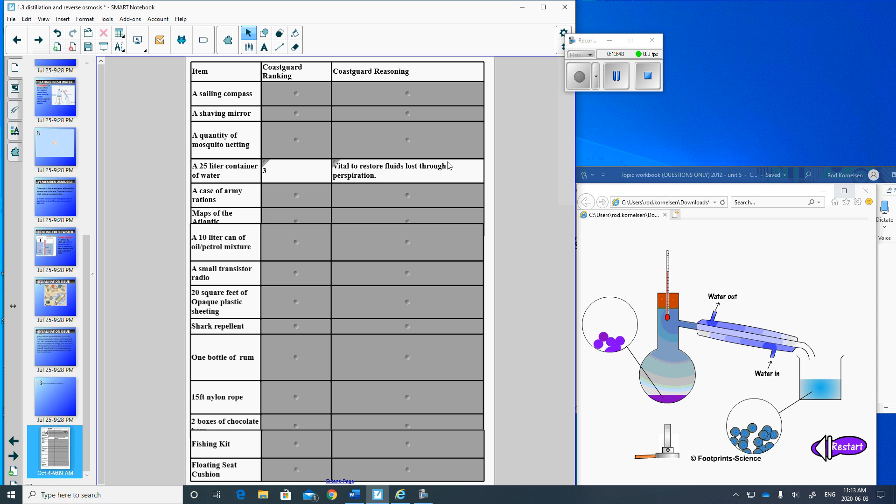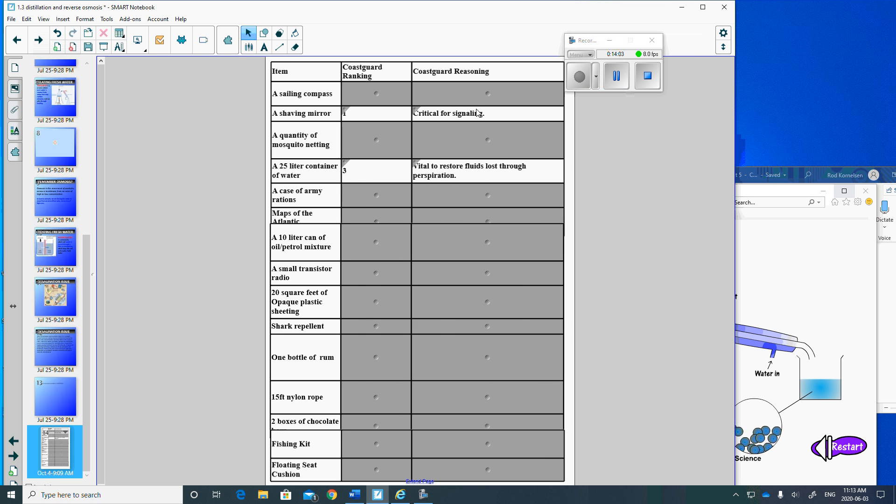Coast Guard says, yes, it's vital to restore fluids through lost perspiration. Even more important, look at this, number one on the whole list: a shaving mirror. Why would a shaving mirror be number one? Because you can use it for signaling to get help. None of the rest of this matters if you aren't rescued.